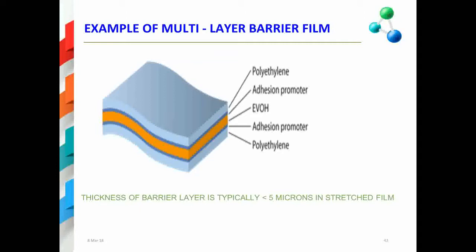The presence of the adhesion promoter or tie layer is due to the chemical differences between the PE or PP and the EVOH. If one does not use the tie layer, the adhesion between the various layers is in fact very poor. In this structure, for an oriented final film, a typical thickness for the barrier layer of the EVOH can be less than five microns. This is for the final stretched film, if one is talking about an oriented film structure.